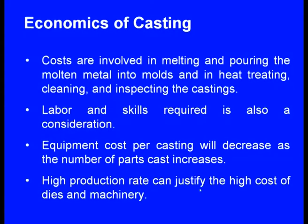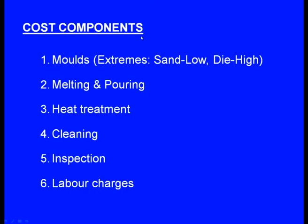Equipment cost per casting decreases as the number of parts cast increases. For die casting, the equipment is very costly. If only 10 or 20 castings are made, the cost per component would be very high. On the other hand, if 5,000 components are produced, the cost will drastically reduce. High production rates can justify the high cost of dies and machinery. Cost components range from sand (very low) to die casting (very high) for mold costs.